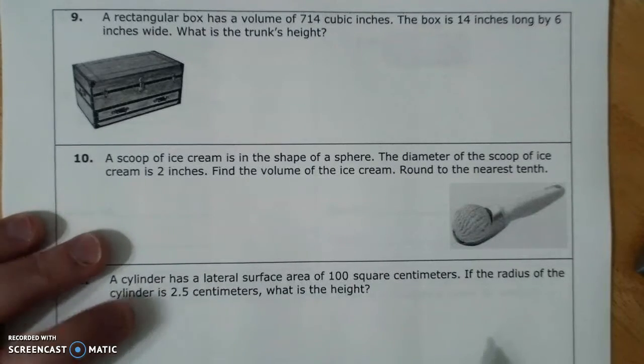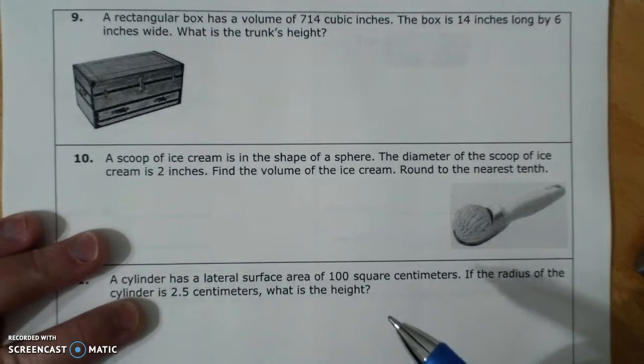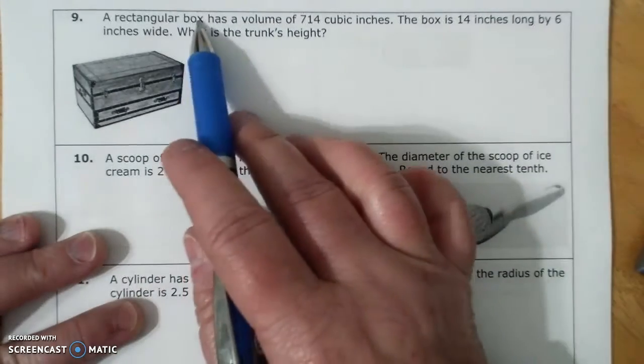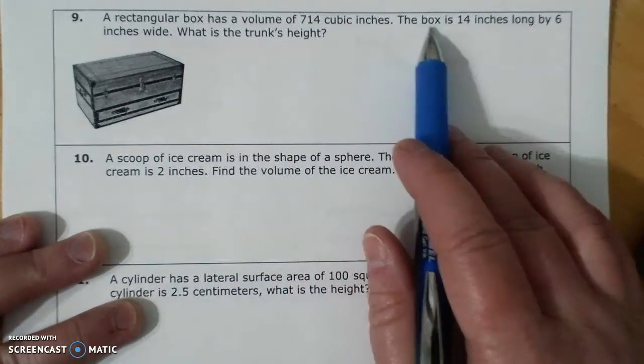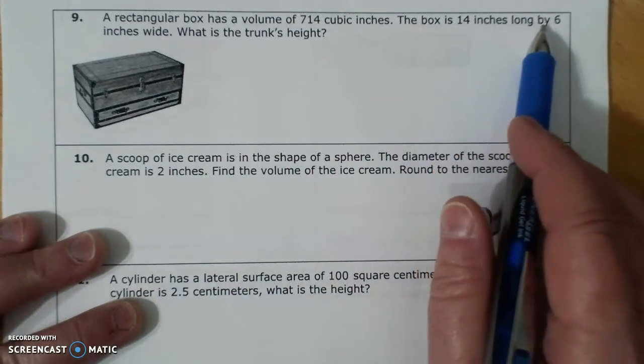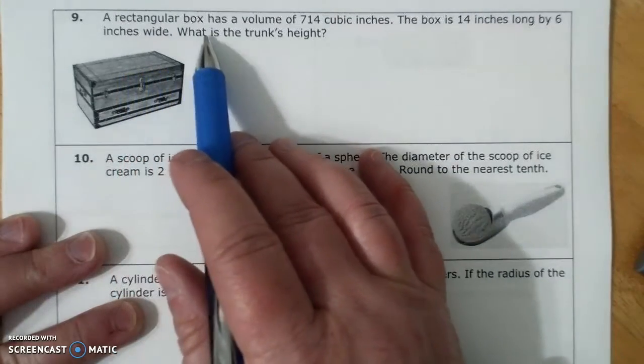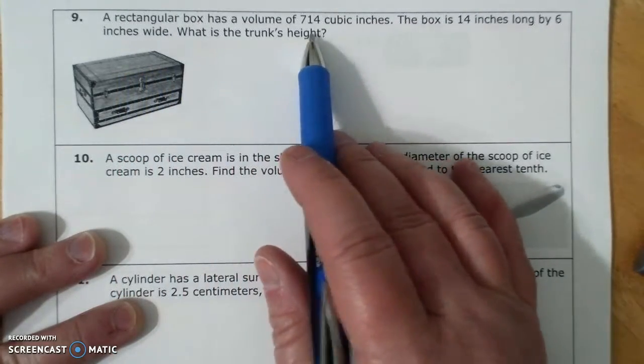Part 2 of your review for surface area and volume test. A rectangular box has a volume of 714 cubic inches. The box is 14 inches long by 6 inches wide. What is the trunk's height?